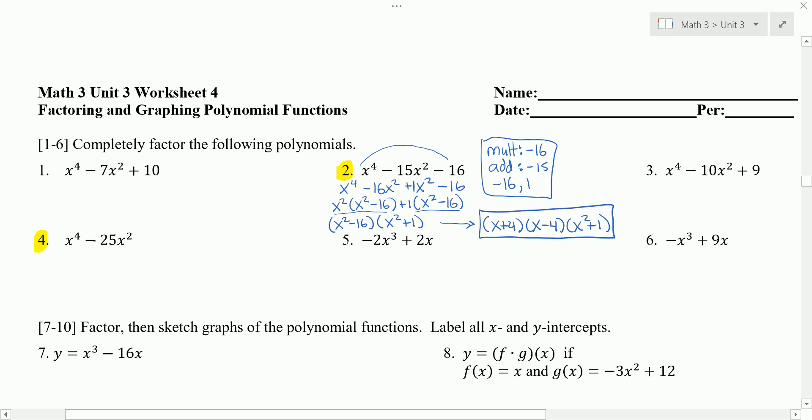On number 4, we can factor out an x squared from the first two terms. And I'm left with x squared minus 25, which is a difference of two perfect squares. So that factors to x plus 5 times x minus 5. And now we're completely factored.